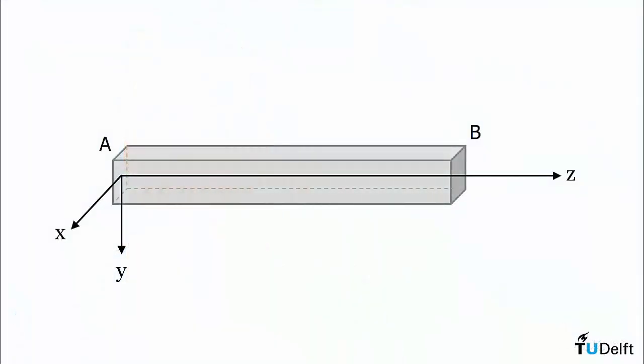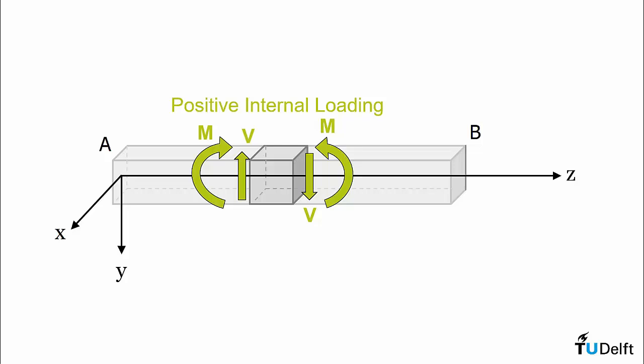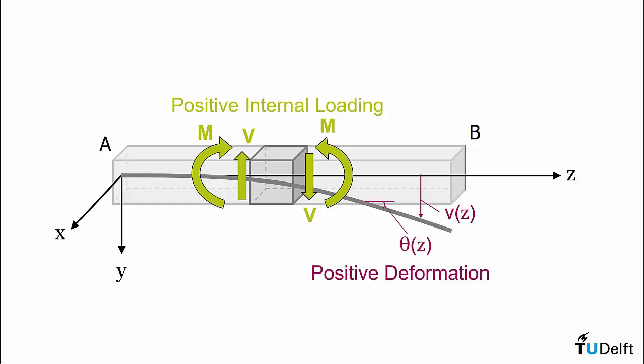Before we jump into looking at the deformation of a beam, we need to recall the coordinate system and sign convention we are using in this course. For a simple horizontal beam, we denote the position along the beam as the z axis, with the y axis acting positive downwards. In this coordinate system, we consider internal moments, shear forces, and distributed loads as being positive. Using this convention, we can denote a positive beam deflection by the letter V, which is positive in a downwards direction. All of the formulas derived in this video will be for this sign convention, so please be cautious when alternative coordinate systems and/or sign conventions are used.